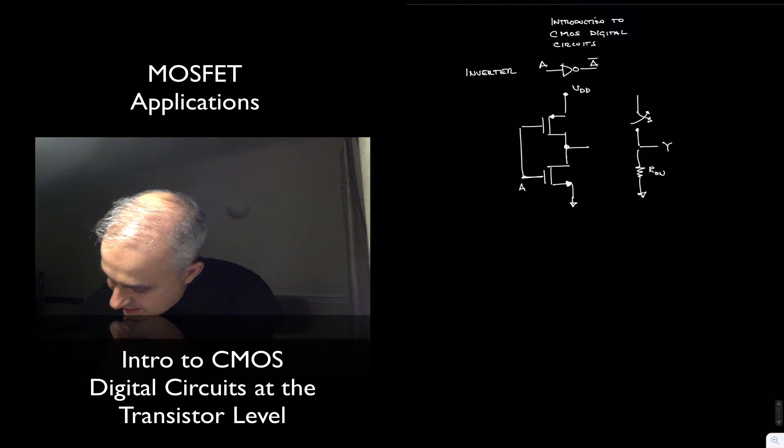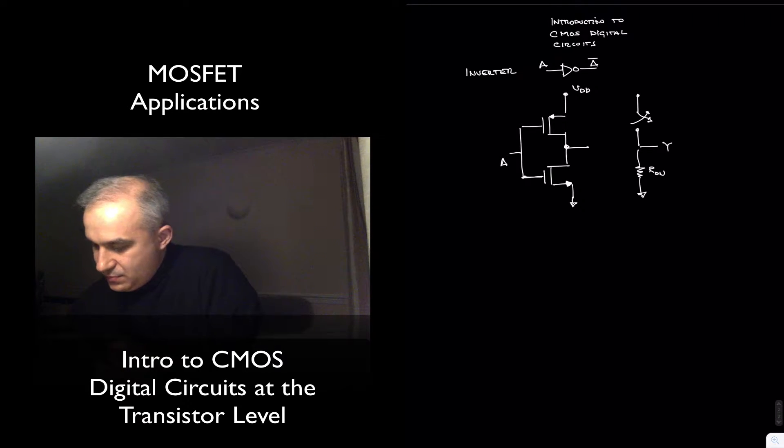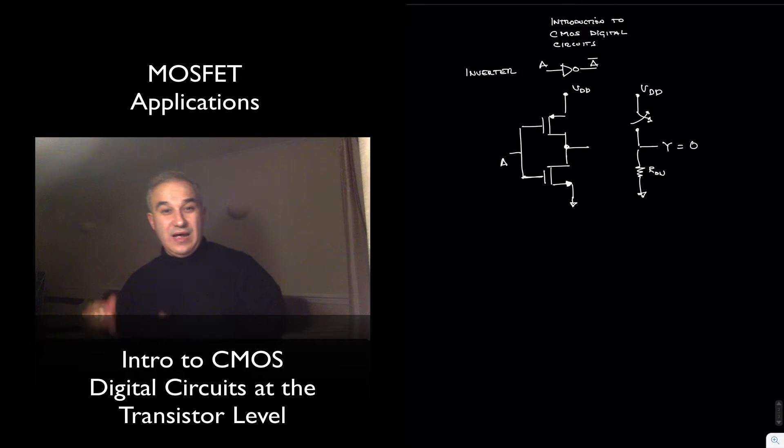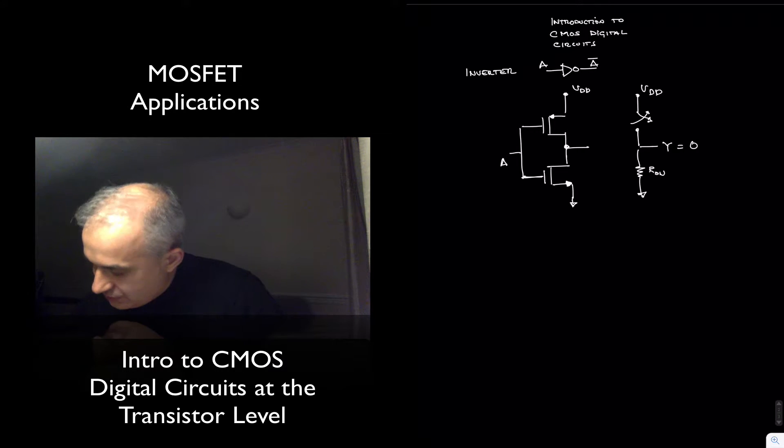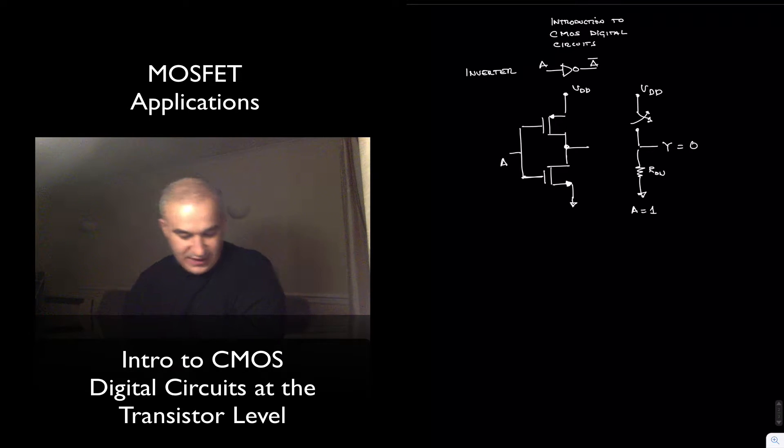For an A value that is low, VDD, and therefore, this is going to give us a zero, a low voltage, and for a high value, so I'm going to say for A equals one, that's what we get.